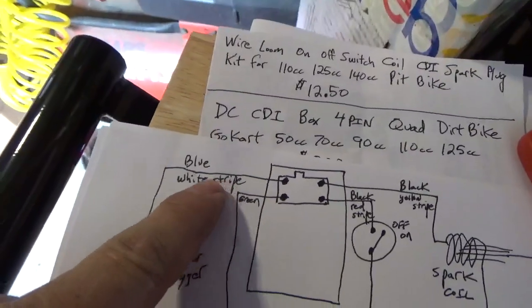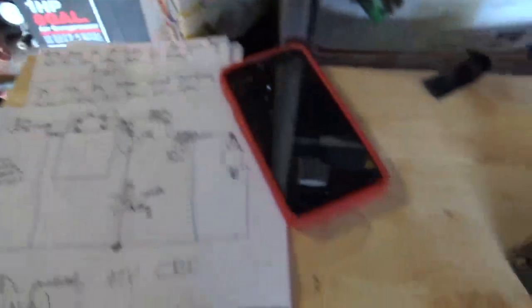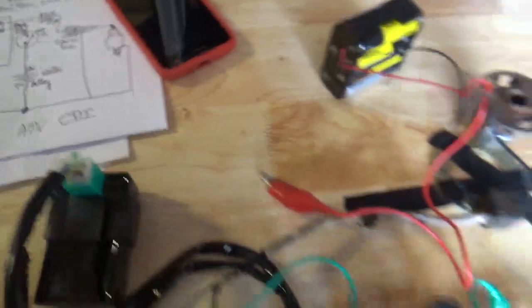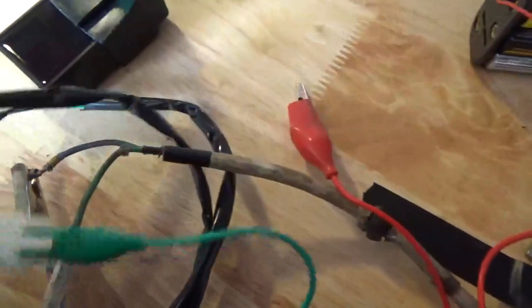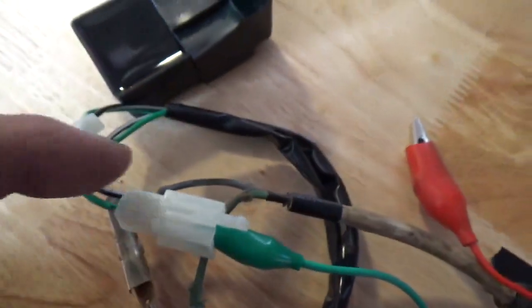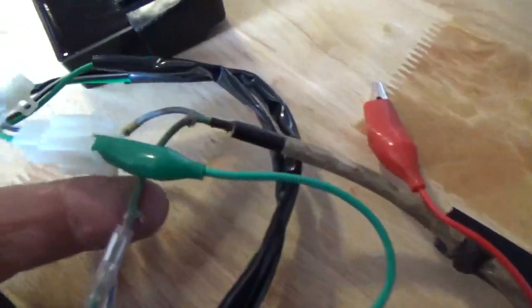Take note: top left, blue with the white stripe. It goes to the pulse generator, right? See blue with the white stripe comes out of here and see blue with the white stripe right there. And you see how it goes into the blue and the white stripe of the pulse generator.